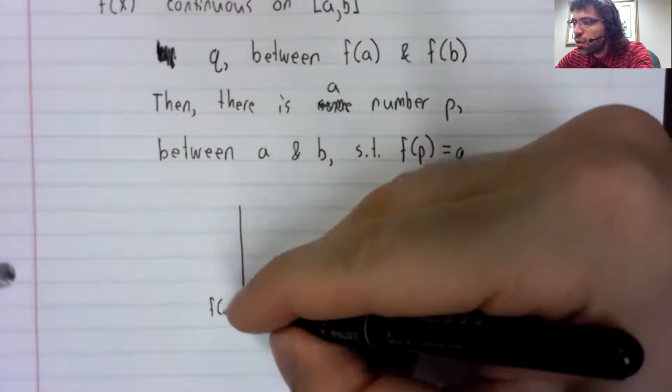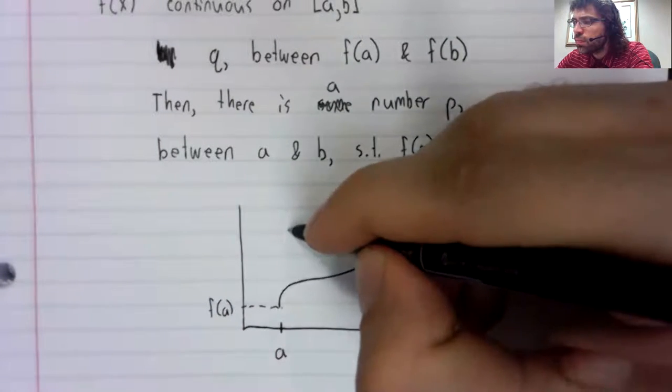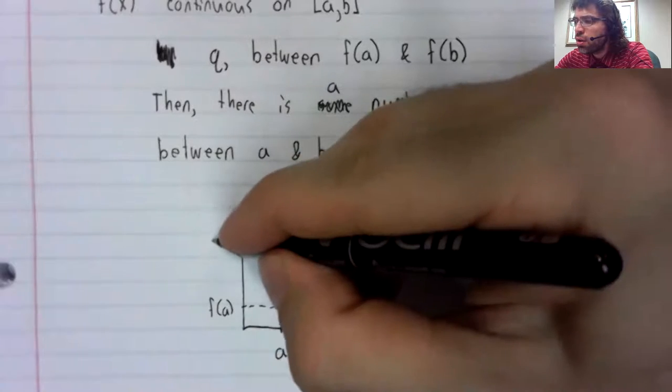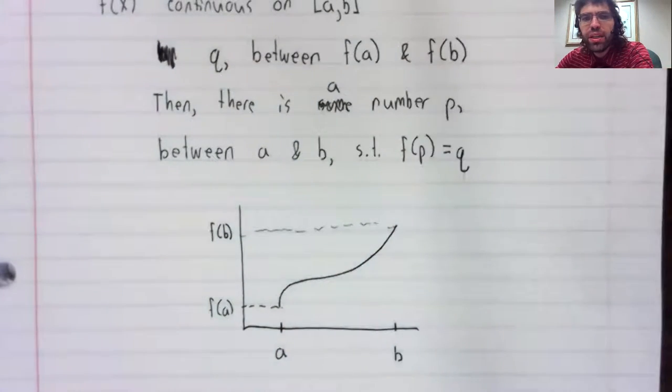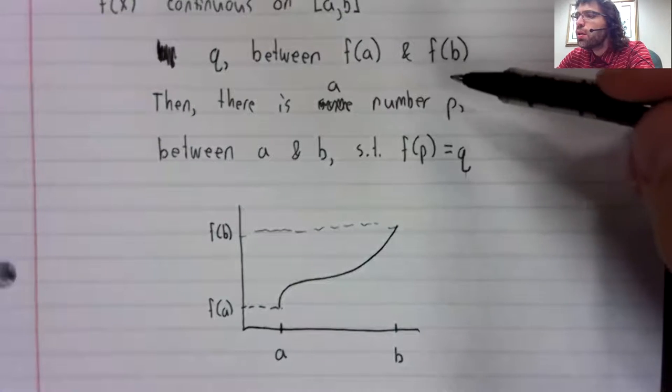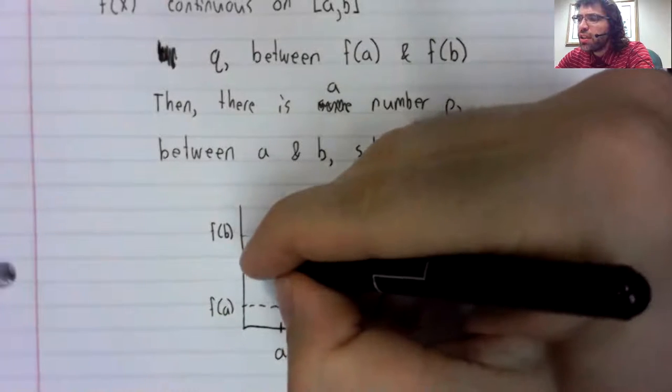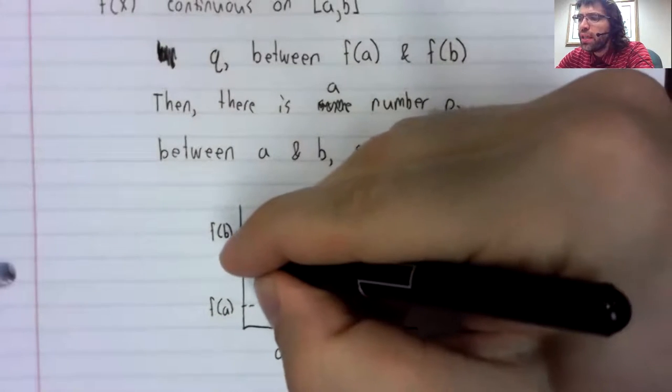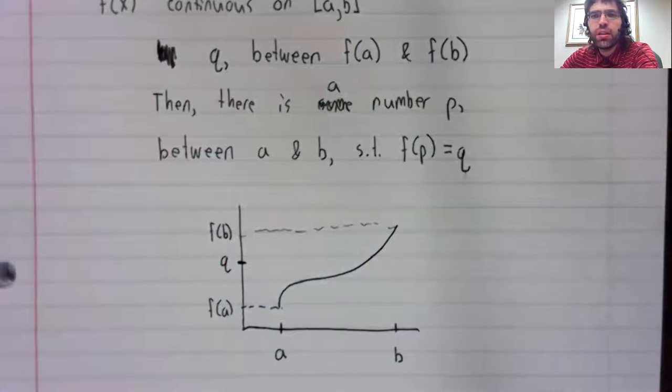Here is f of a. Here is f of b. And q is any number between f of a and f of b.